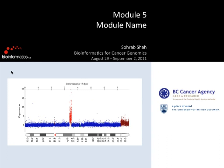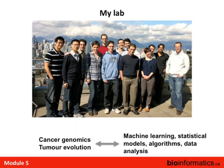The name of this module is 'Inferring Copy Number Changes from High-Density Genotyping Arrays.' I'll start with a little background on what I do and where I come from. My lab is in Vancouver at the BC Cancer Agency, and I'm affiliated with the University of British Columbia. My appointment is in the Department of Pathology, with a cross-appointment in the Department of Computer Science.